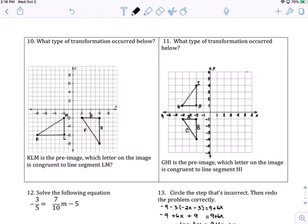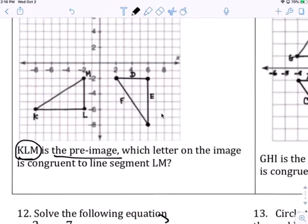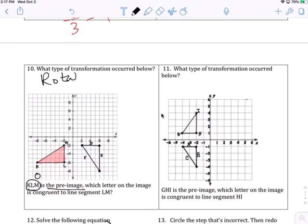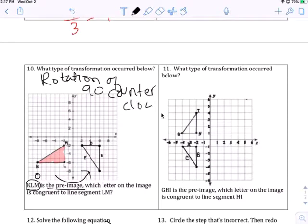What type of transformation occurred below? It's flipped, and it's not the exact image. Occurred by KLM is the pre-image. So this is the pre-image. I was looking for that. This is zero, and this is a flipped. So it's a rotation, not obvious, a reflection of 90 degrees counter or 270 clockwise.